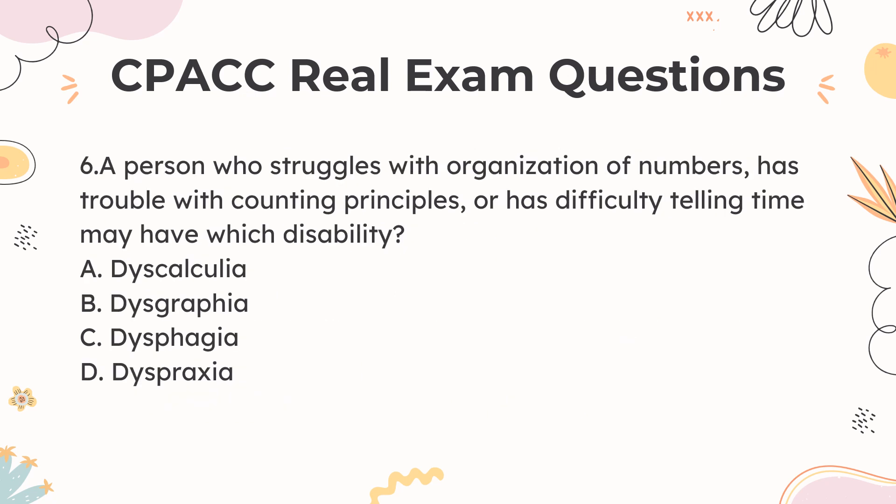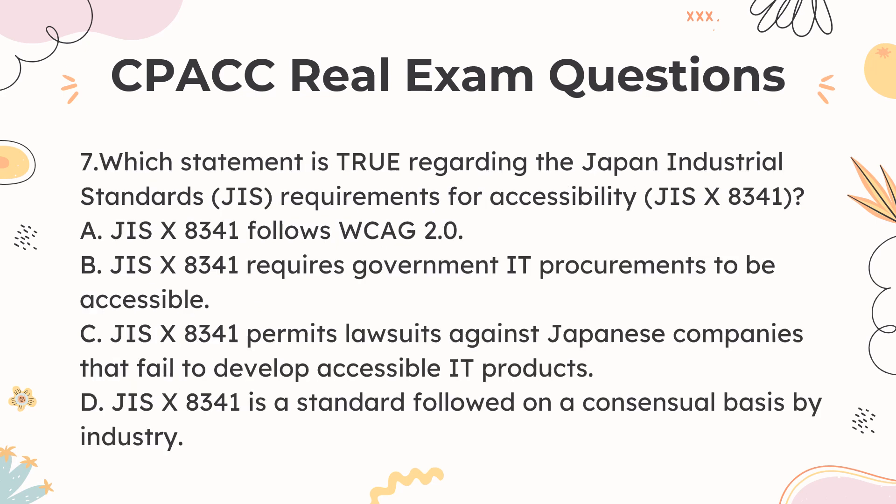6. A person who struggles with organization of numbers, has trouble with counting principles, or has difficulty telling time may have which disability? a. Dyscalculia b. Dysgraphia c. Dysphagia d. Dyspraxia